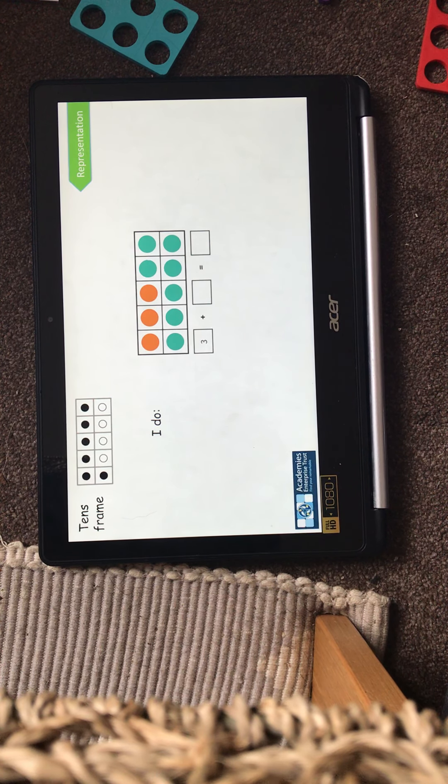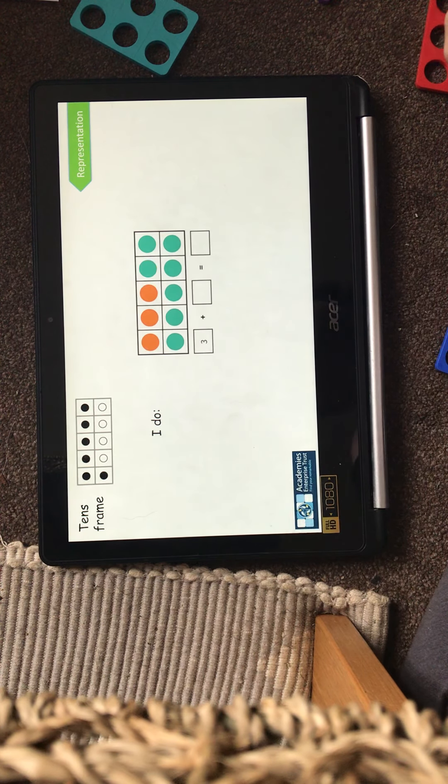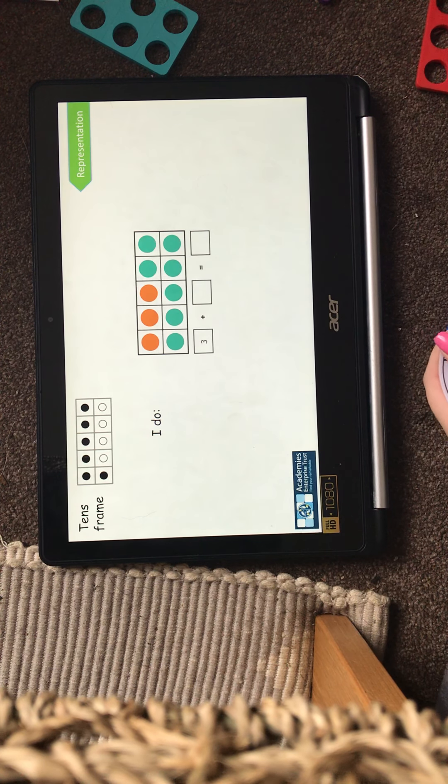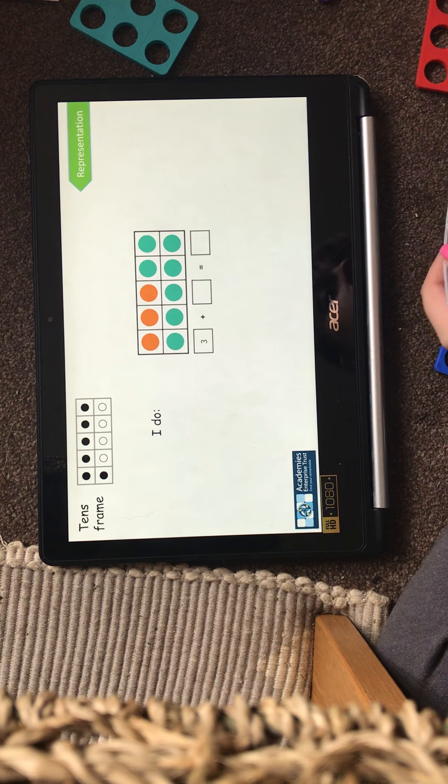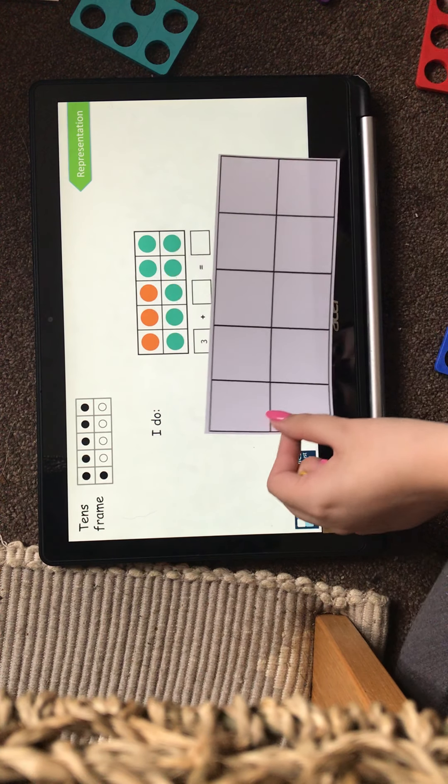We can use our 10s frame, which looks a little like this, and we can use counters, and we can use our pens and draw them up. So for this example, I will need 3 counters. 1, 2, let me find the 3rd. 3.